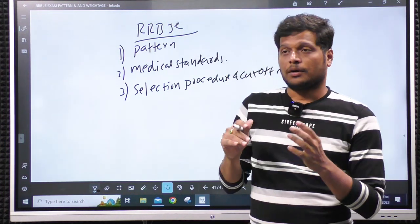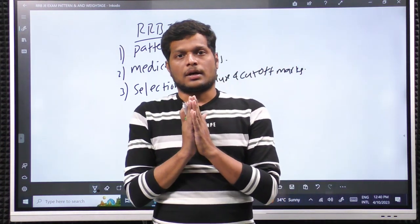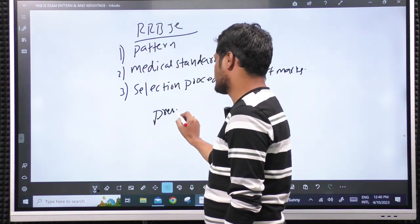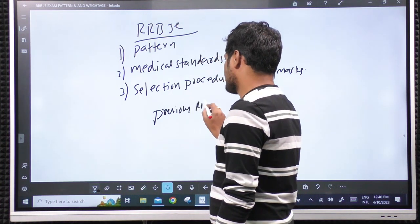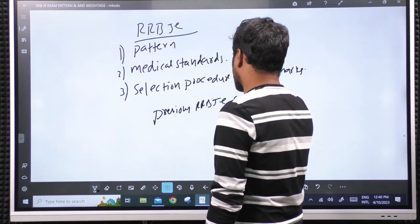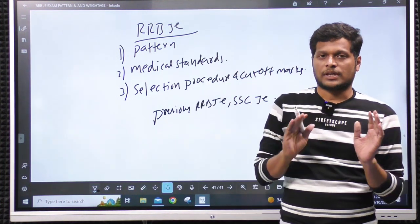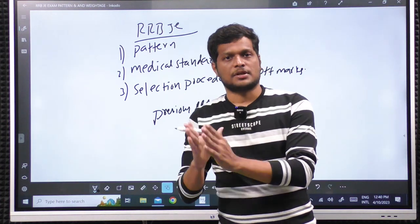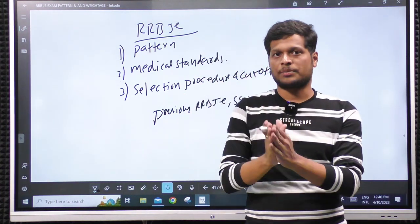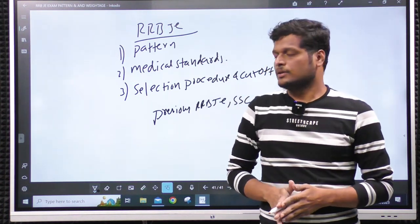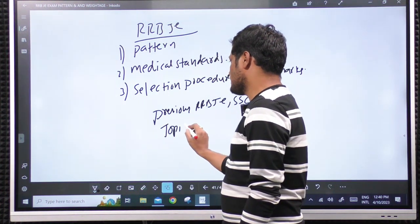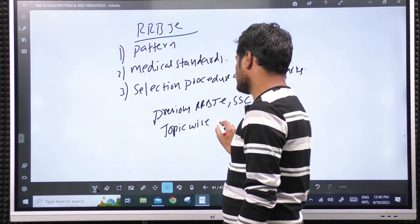In this course, apart from the classes, we will be solving complete previous questions of RRBJE and SSEJE as well. Complete A to Z, whatever previous questions we have, will be solved topic-wise. After completion of the topic, complete previous questions of SSEJE and RRBJE questions of the topic will be solved in the class. And topic-wise tests also will be there.